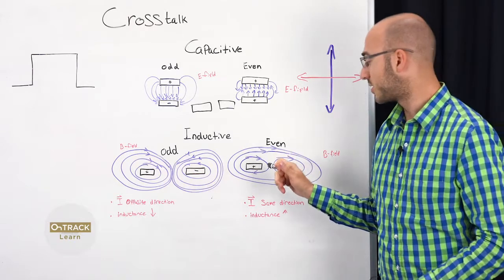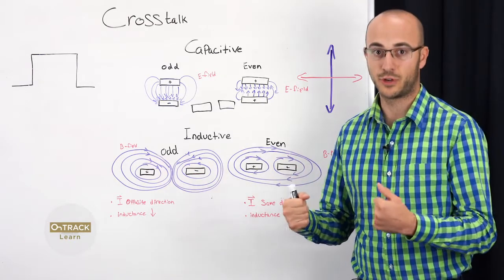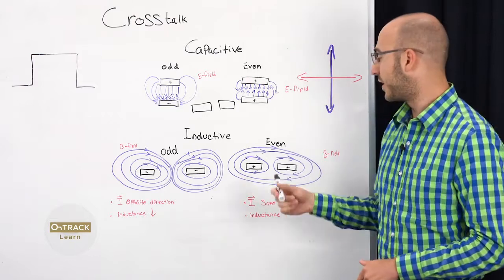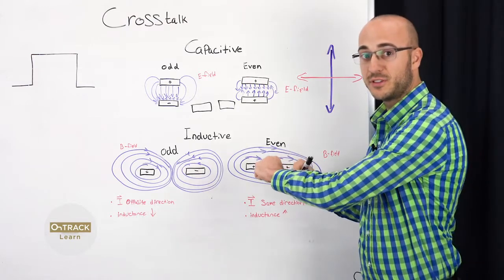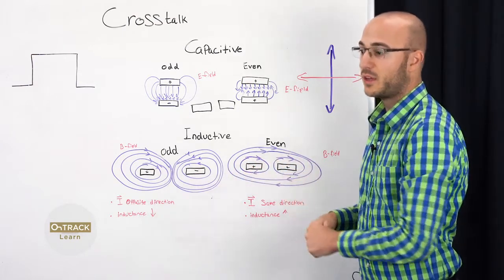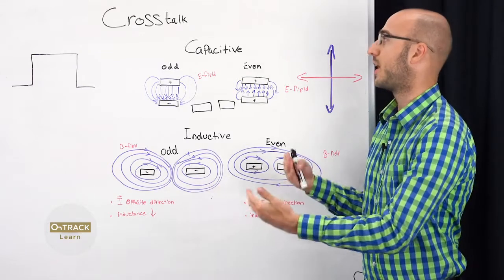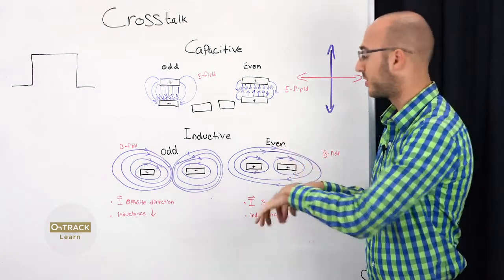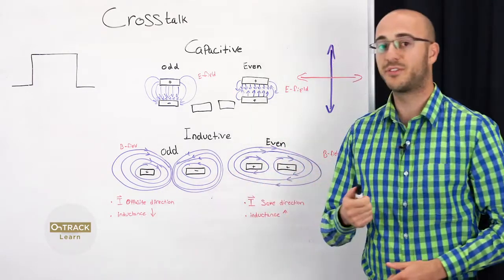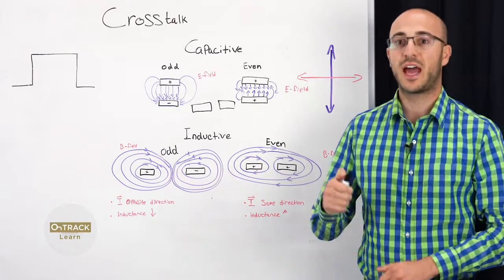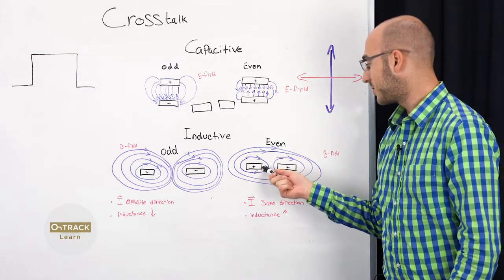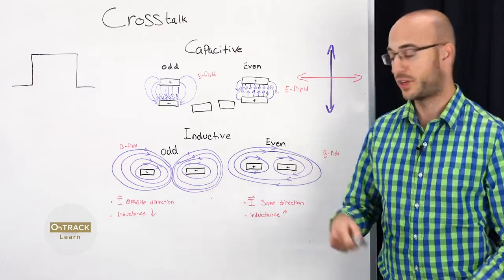Another solution for inductive crosstalk is to separate your traces. And the reason being is, if you can get these fields farther apart, where they're not interacting, you don't have to worry about crosstalk, because the fields aren't interacting. So separate those out. And the rule of thumb for that is to have the gap between the traces be three times the width of the trace.